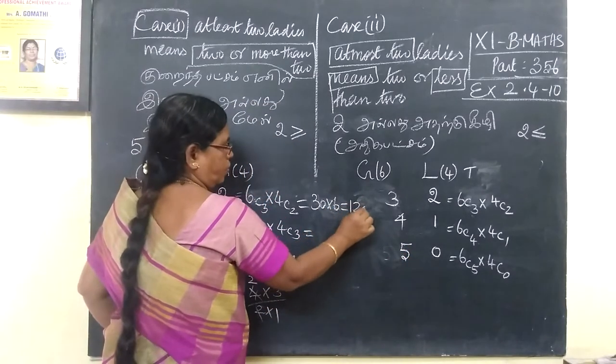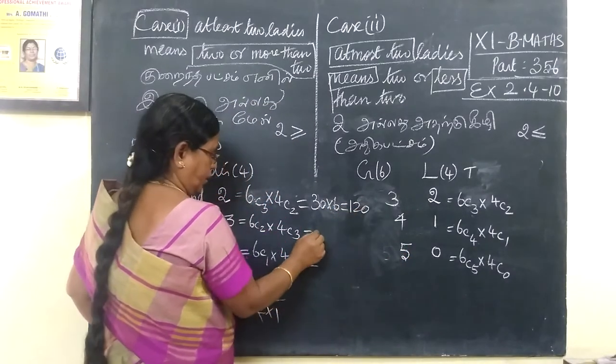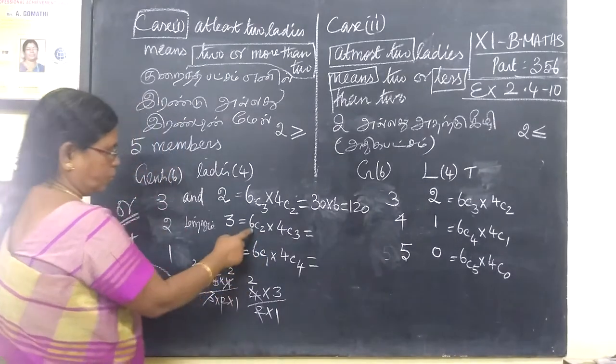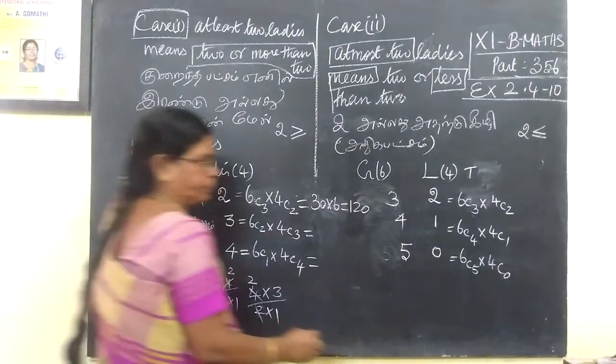It is equal to 120. Then C(6,2), this is equal to N.